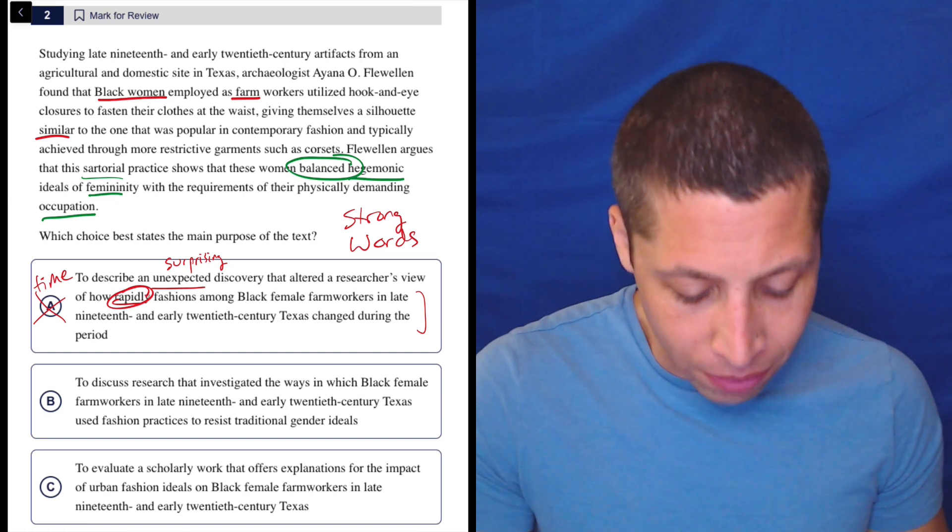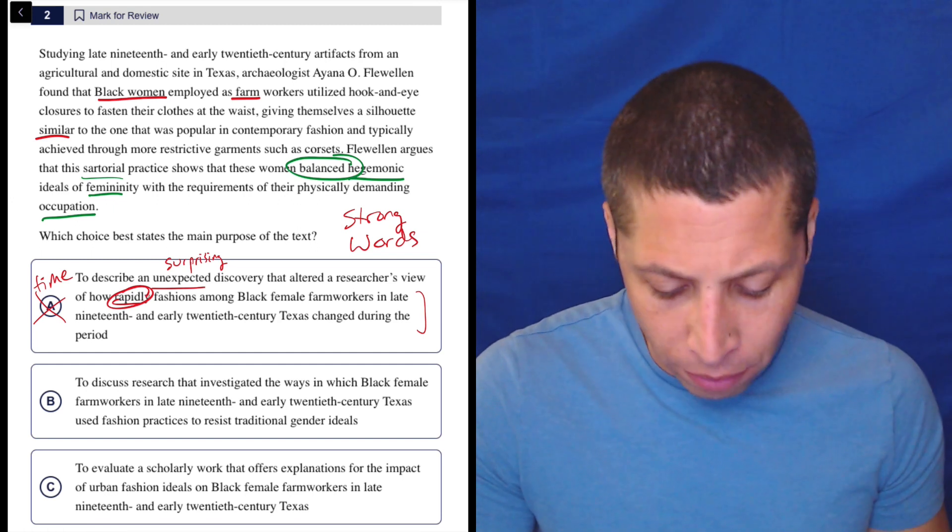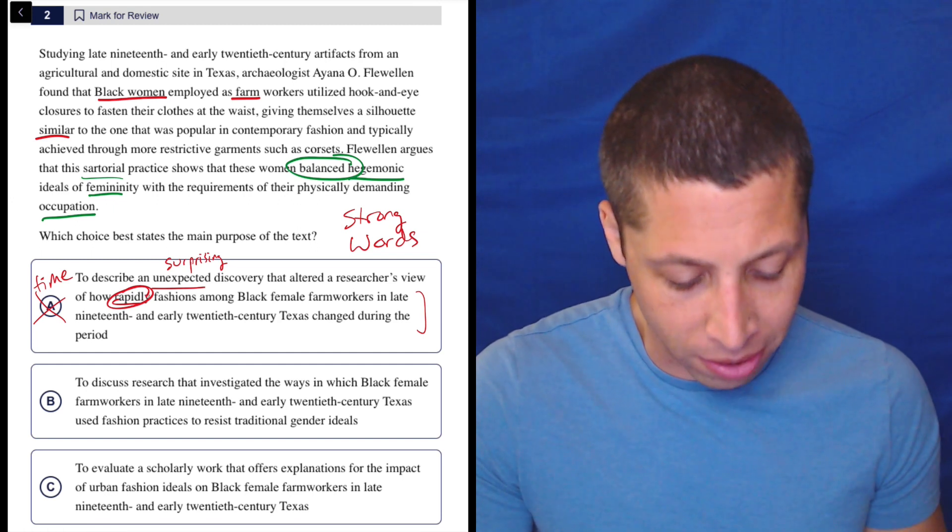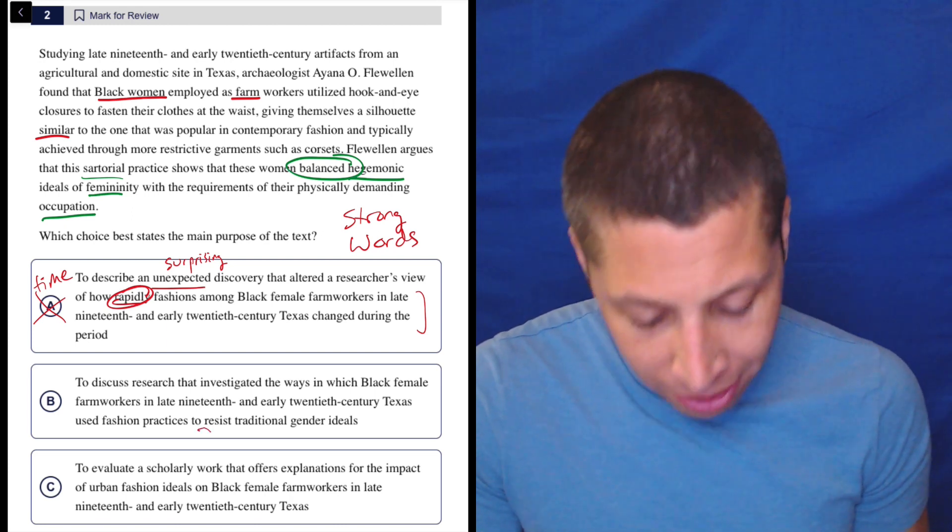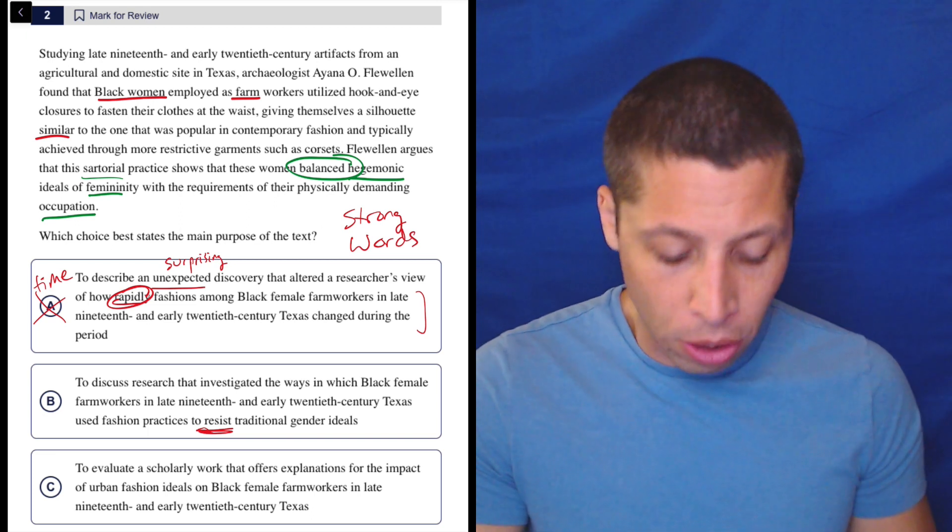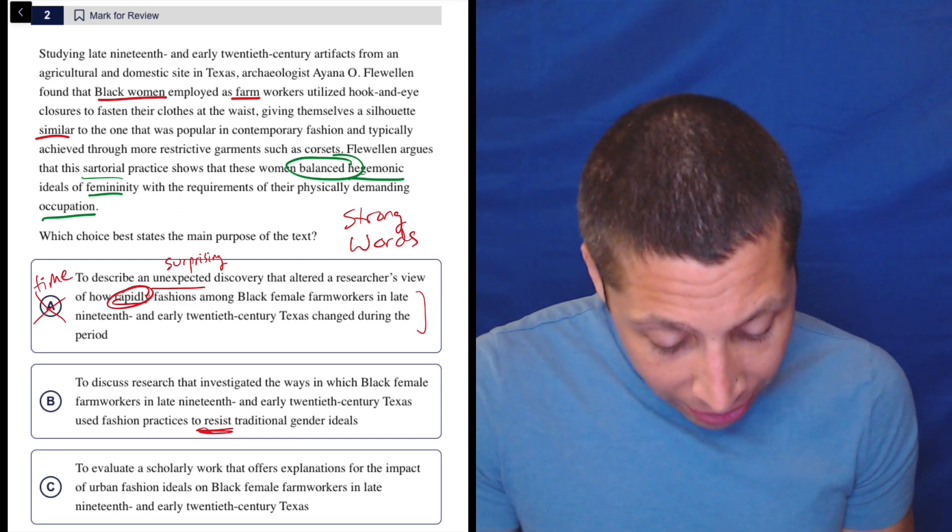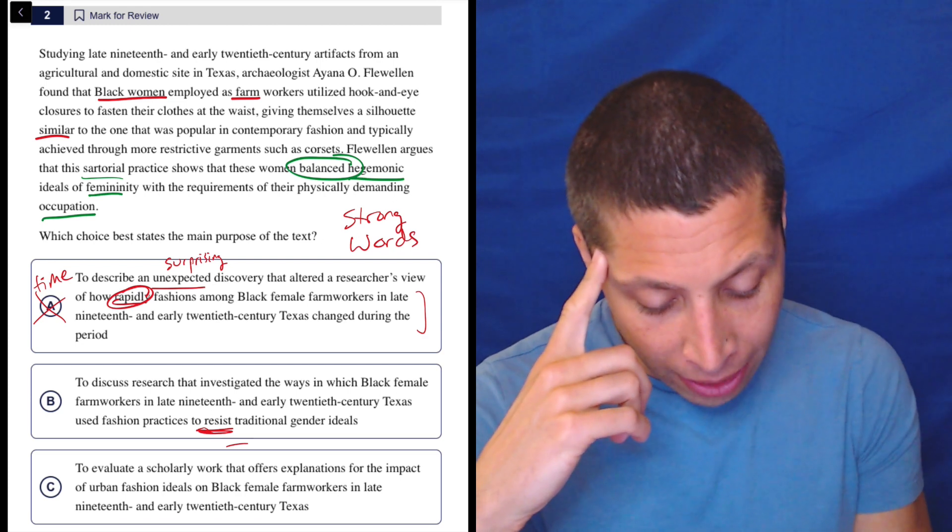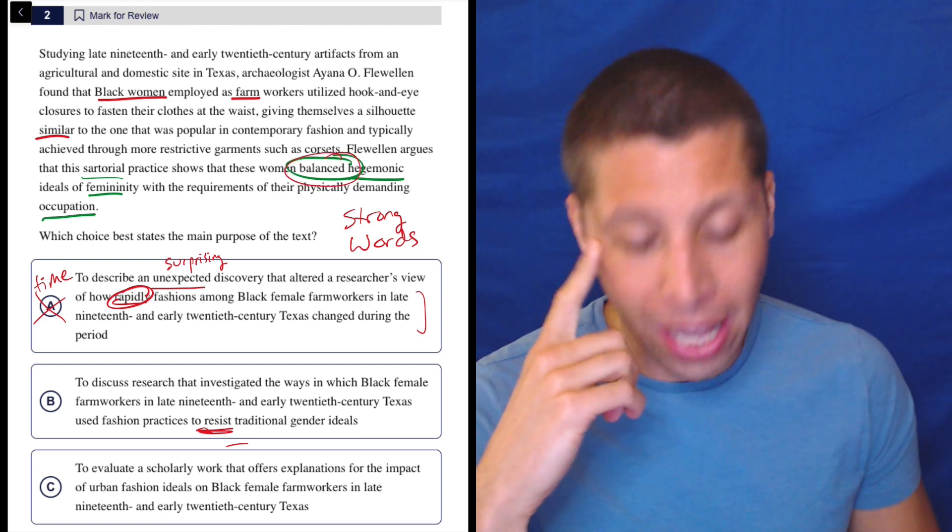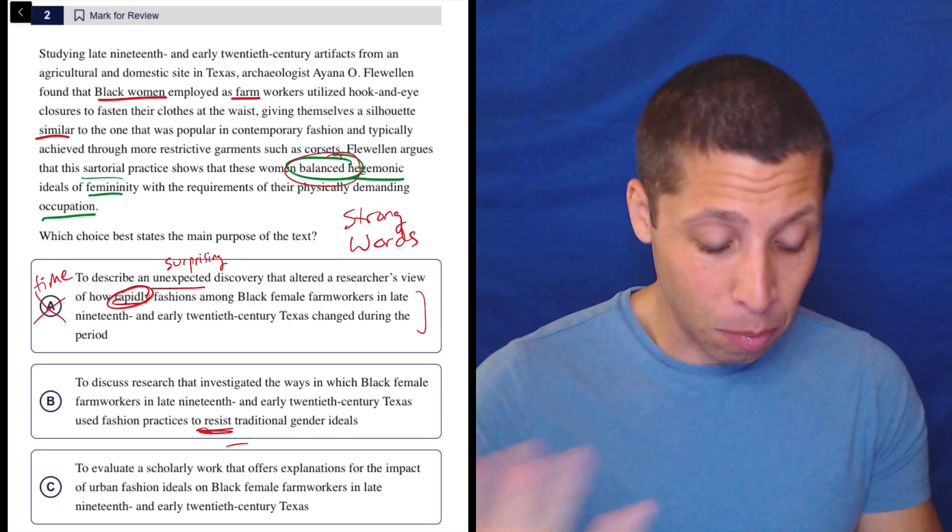B, to discuss research that investigated the ways in which black female farm workers in late 19th and early 20th century Texas used fashion practices to resist traditional gender ideals. Well, resist is another strong word, right? So here that's got a negative connotation, right? You're fighting against something. But yet the word that we had in the passage that maybe goes with that is the word balance, right? Balance is much more positive.